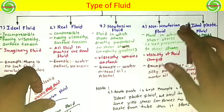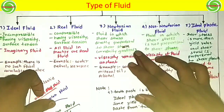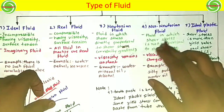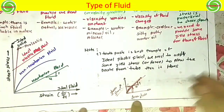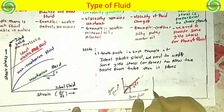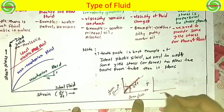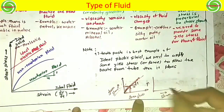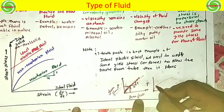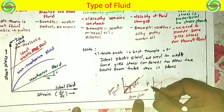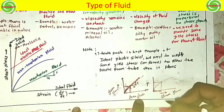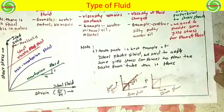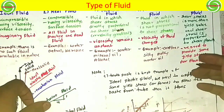Now we come to the non-Newtonian fluid, which is exactly opposite to the Newtonian fluid. It is the fluid in which shear stress is not directly proportional to the rate of shear strain. When you increase the shear stress, there is a non-proportional rate of increase of shear strain — the shear strain and shear stress are not proportional to each other.